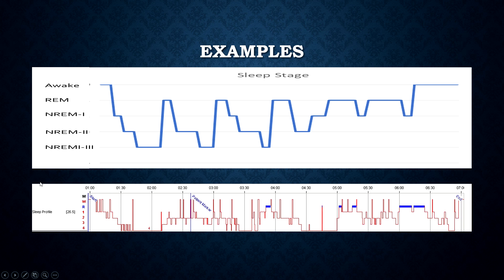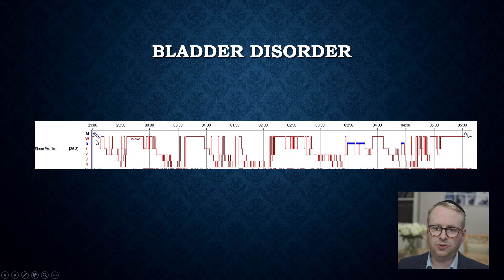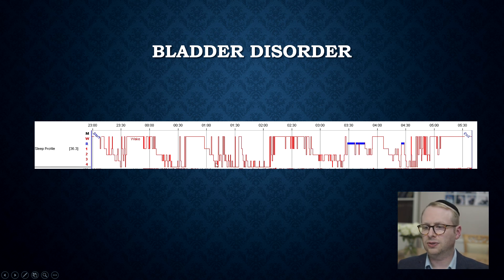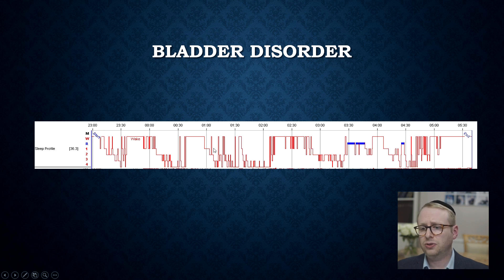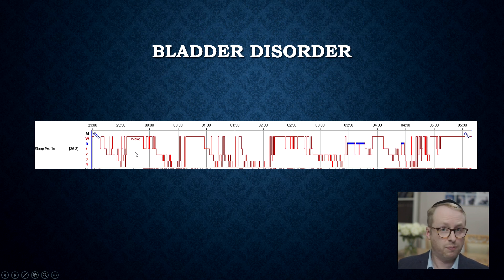Not everyone has this pattern. Here's an example of someone who's got a bladder hypermobility disorder. You can see that they are basically going down into slow-wave sleep but with plenty of arousals and plenty of awakening. They're spending an awful lot of the night being awake or in the lighter stages of sleep, and they do descend occasionally into slow-wave sleep, but a lot of that is fragmented.